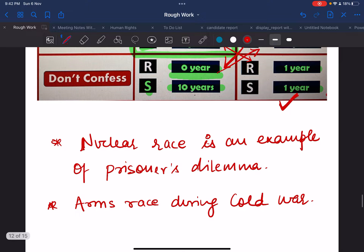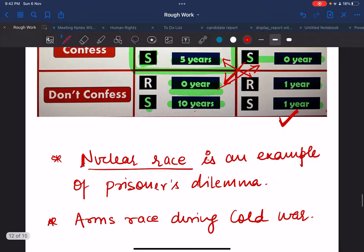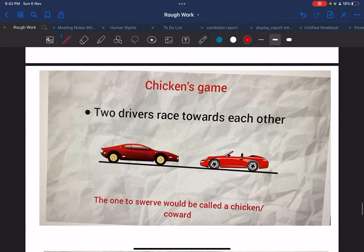This is what's happening around the world. If you take the nuclear race example, this is what has been happening where both countries or a number of countries have been increasing their nuclear weapons just thinking that the other country is also doing so. Arms race which has been going on since the Cold War - this is the best example of Prisoner's Dilemma, where the parties are not trusting each other and they are working in silos.